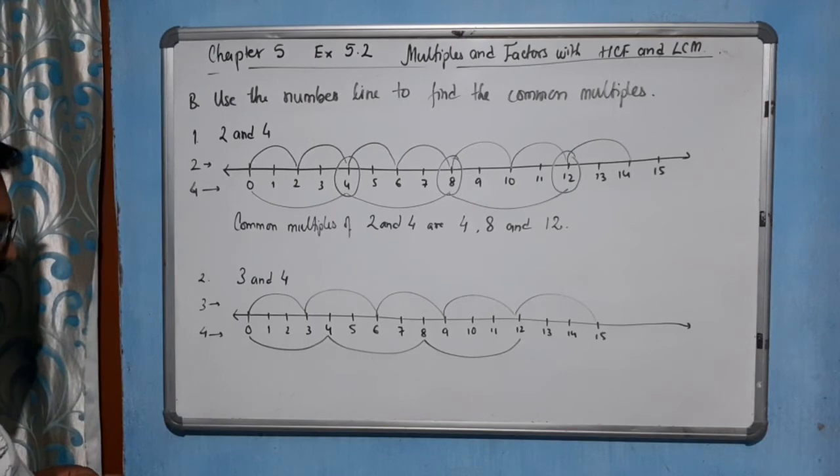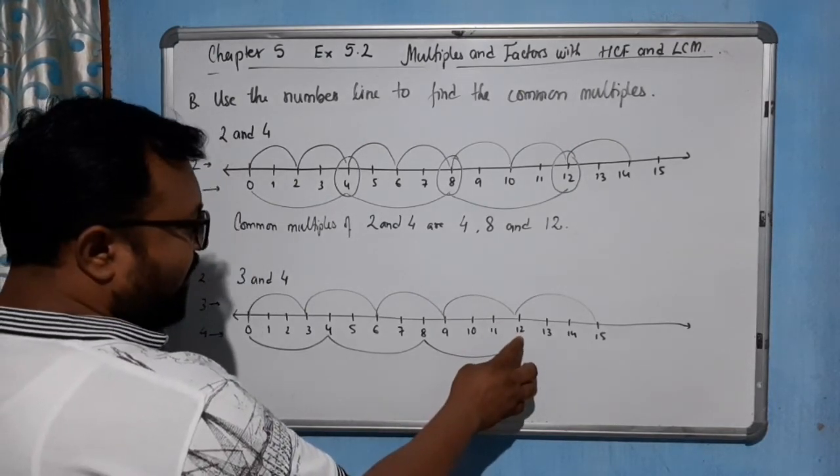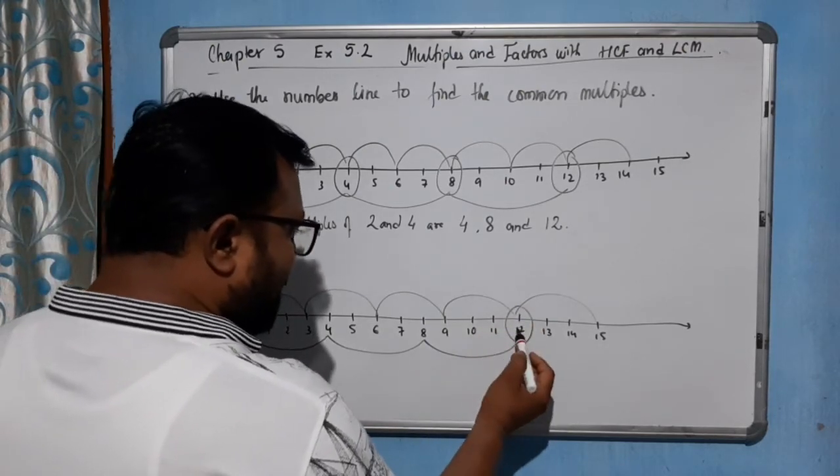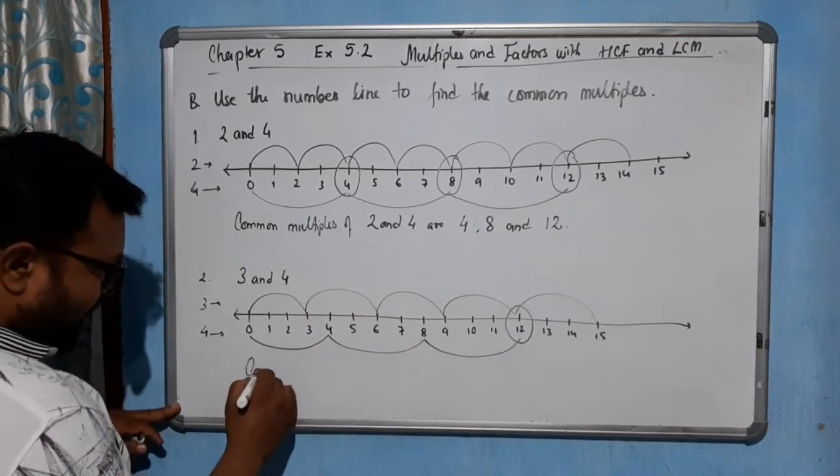Now, in this case, we can clearly see that only this 12 right now in this number is common. For both, this 12 is multiple of 3 also, 12 is multiple of 4 also.